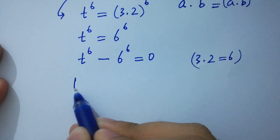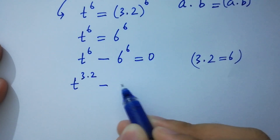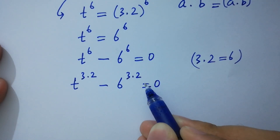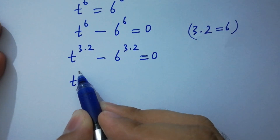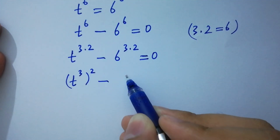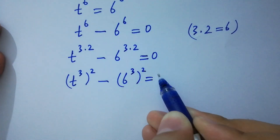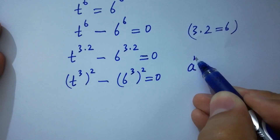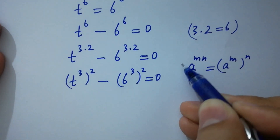We can rewrite this as (t^3)^2 - (6^3)^2 = 0, using the rule that a^(mn) = (a^m)^n.